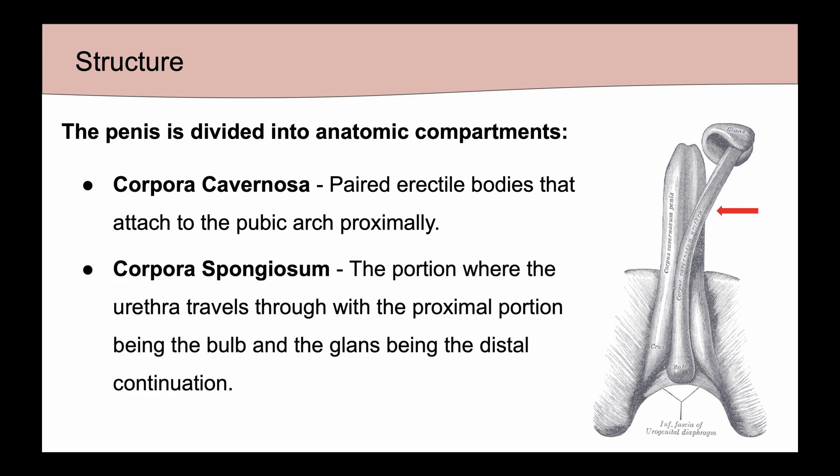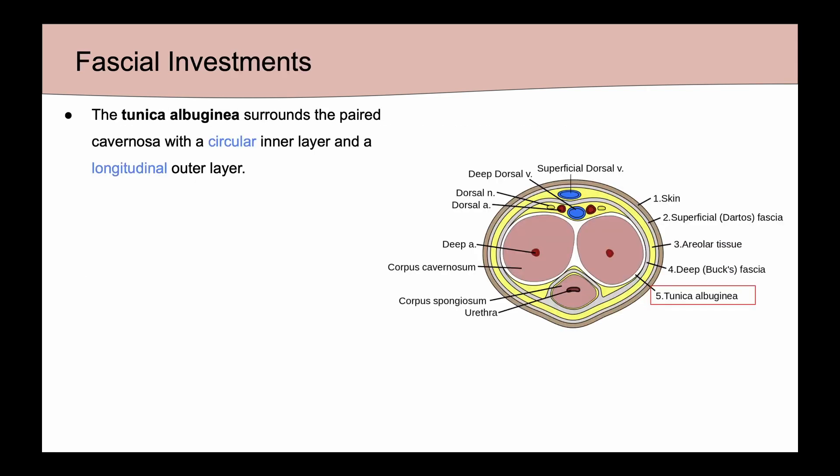We have the corpora spongiosum — this is the portion that the urethra travels through, with the proximal aspect being the bulb and the distal aspect being the glans. Now let's talk about the fascial investments of the penis, going from deep to superficial.